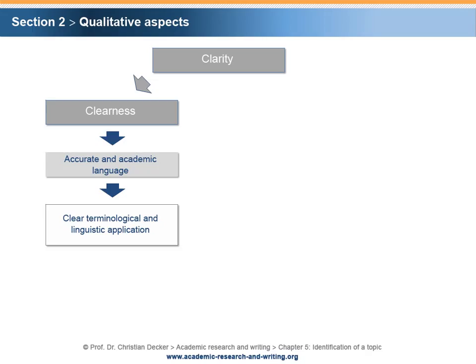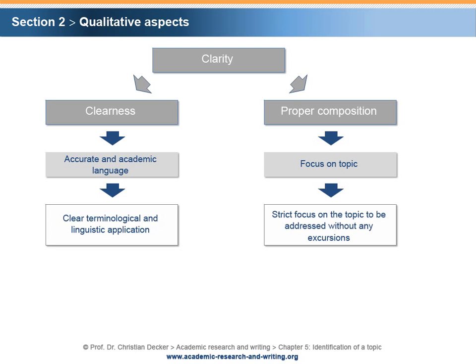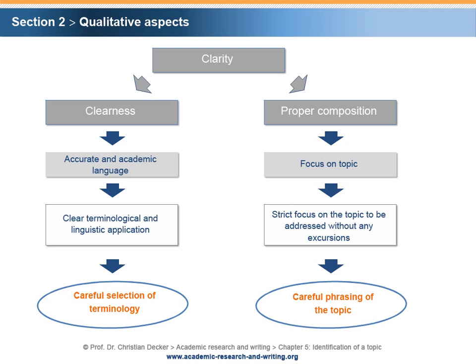Another aspect of clarity is proper composition, which demands a strict focus on the topic to be addressed without any excursions. Clearness implies a careful selection of the terminology while verbalizing a topic. Proper composition implies a careful phrasing of the topic.